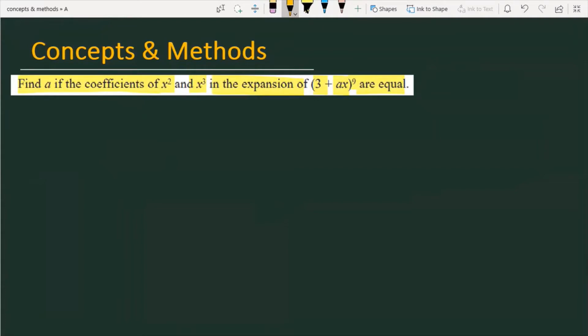In this question, you need to expand (3 + ax)⁹, equate the coefficients of x² and x³, and determine what value of a satisfies this condition. Let's start solving. First, you should know the expansion of (x + y)ⁿ.